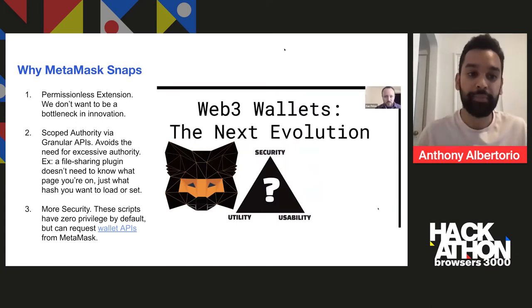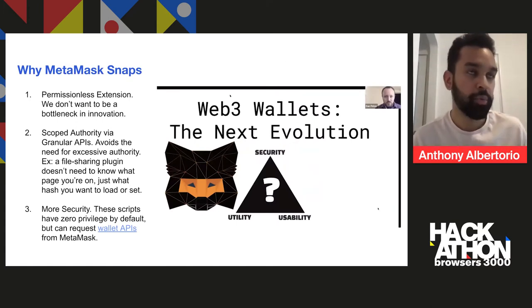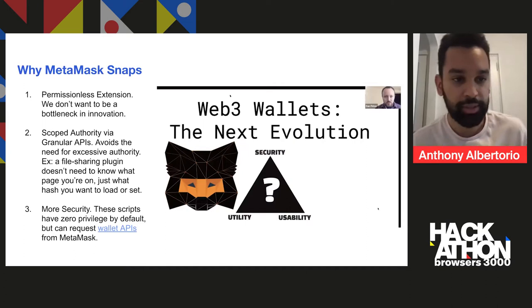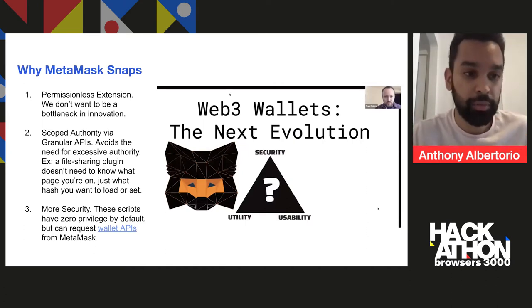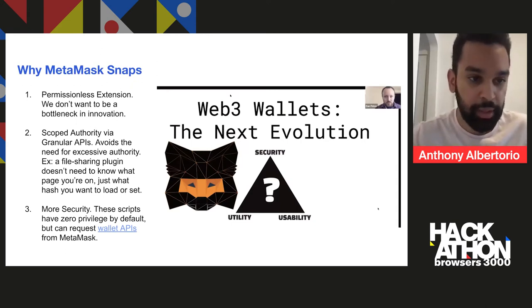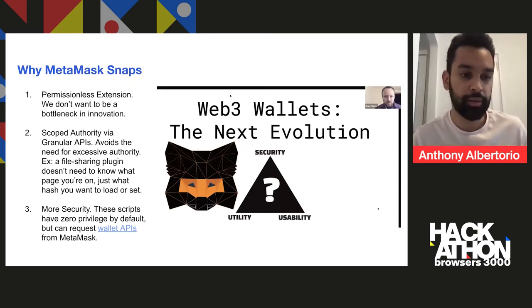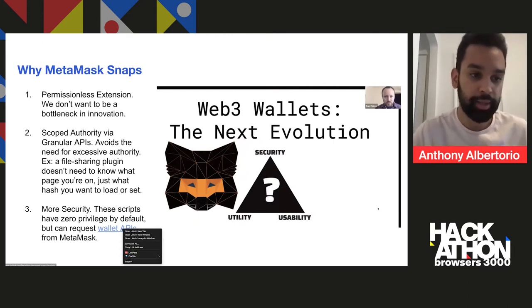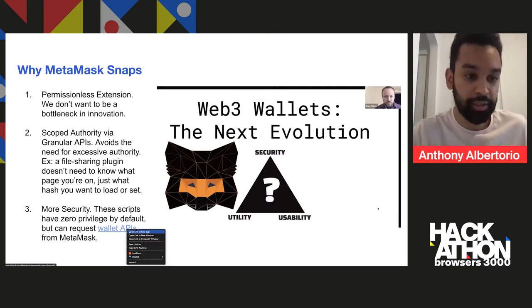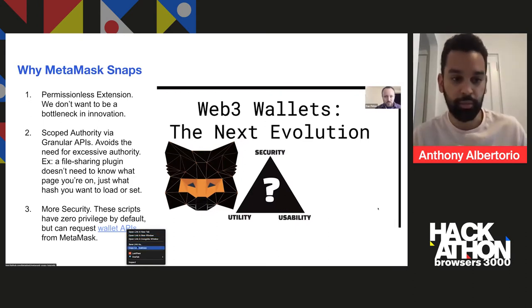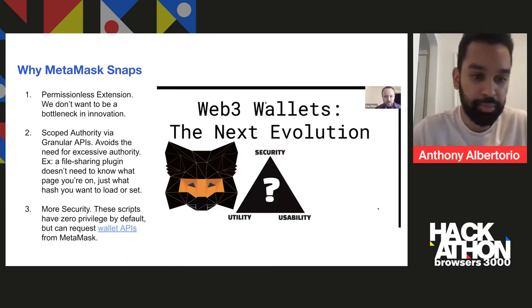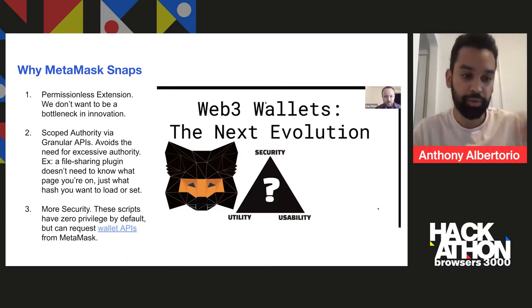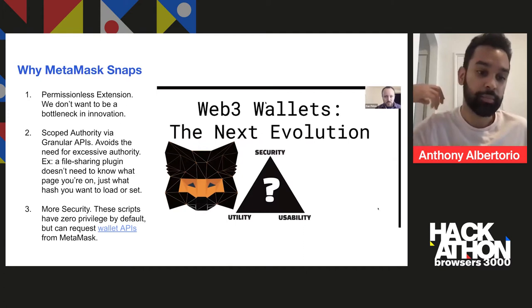So why have MetaMask Snaps? The whole point of our movement is decentralization, permissionless systems, and more innovation. We don't want to be a bottleneck in innovation. We also scope the authority — consent is a big thing. We want to avoid the need for excessive authority. So, for example, a file sharing plug-in doesn't need to know what page you're on, just what things you want to download. These scripts have zero privileges by default, but they can request to work with certain APIs, and then you say yes or no.